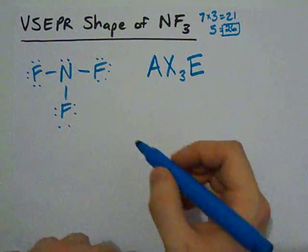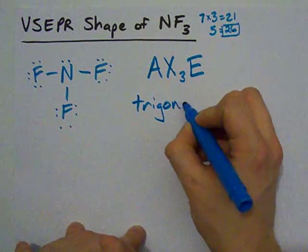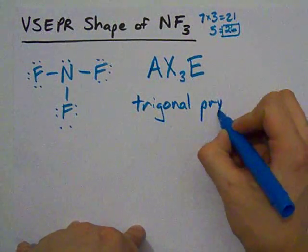When you have three atoms and one lone pair, the shape that you want to attribute to it is called trigonal pyramidal.